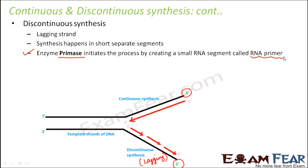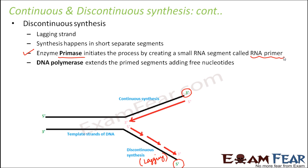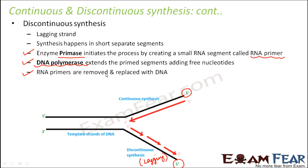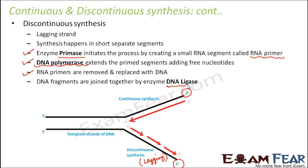A small fragment of the new DNA is formed. Many such small fragments keep forming due to the action of primase and DNA polymerase. But we need a complete strand of DNA, not pieces, so we need something to join these small pieces. The RNA primers are then removed and replaced with DNA, because we do not want any RNA on the complementary strand of DNA. These small fragments are then joined together by the enzyme DNA ligase.